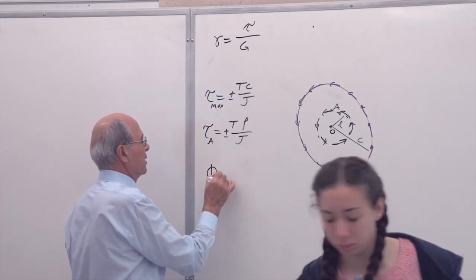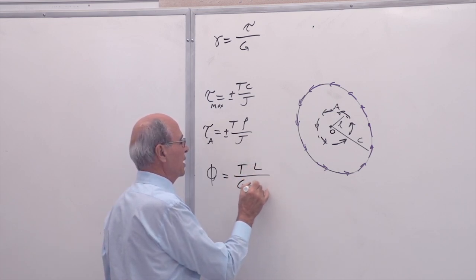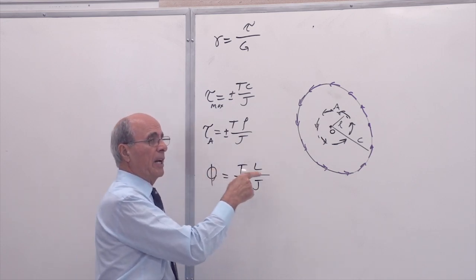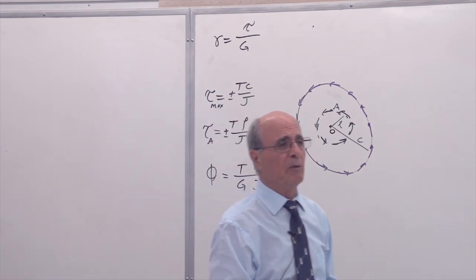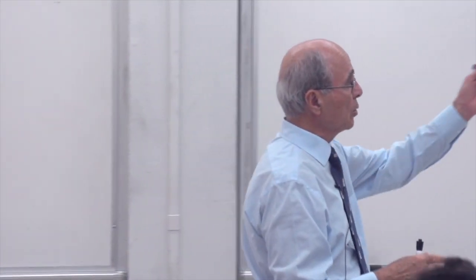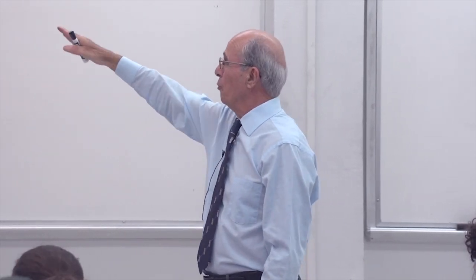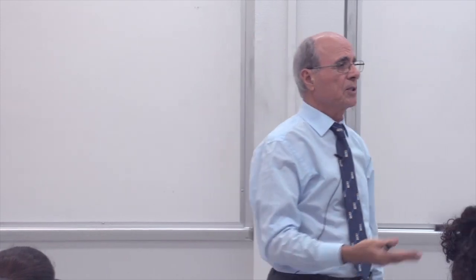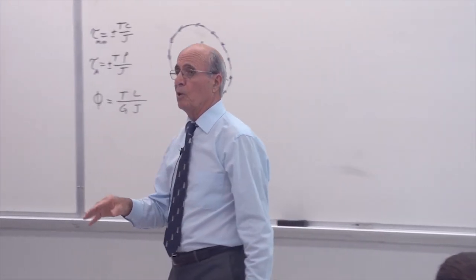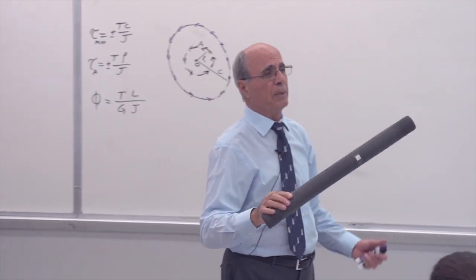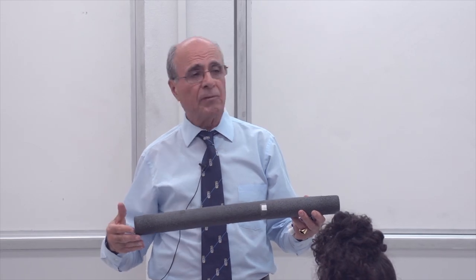I gave you another quantity, phi. Phi ends up equal to TL over GJ — exactly like delta was PL over EA. Instead of P you have torque, length is length. What is phi? It is the relative angular twist of one end of the shaft with respect to the other end.